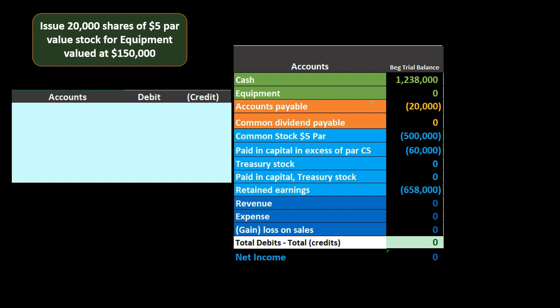We're going to issue stock as we did in a prior presentation, but this time rather than getting cash we're getting something else — equipment. It is entirely possible to transact for something other than cash. In this case we're issuing ownership in the company, giving stock which provides voting rights to the purchasers, in exchange for something of value: the equipment.